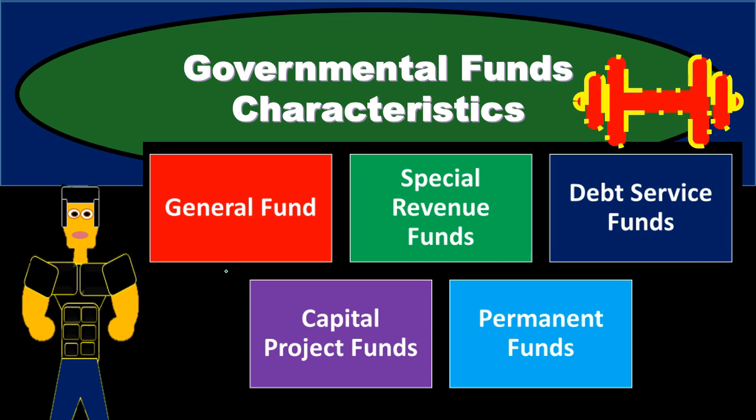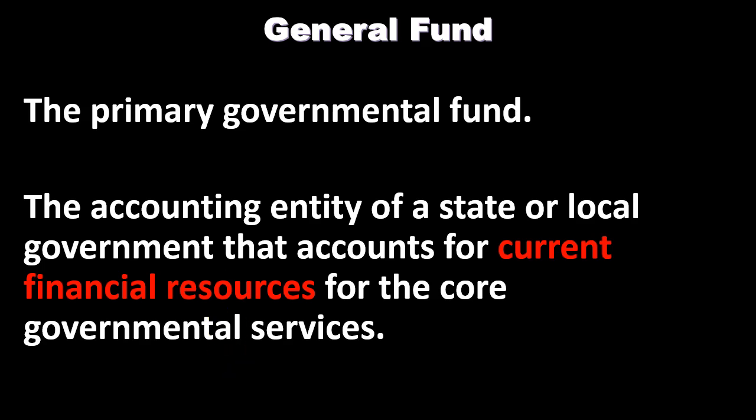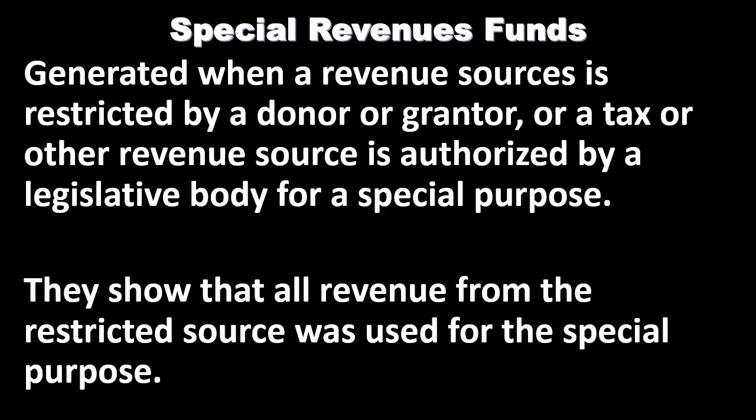We want to compare and contrast the general fund and government-wide activities. The general fund is the primary governmental fund — the accounting entity of a state or local government that accounts for current financial resources for the core governmental services. Note we're accounting for the current financial resources. The general fund, like governmental funds in general, will be on the modified accrual basis. Special revenue funds are only set up when circumstances require it, unlike the general fund where we will always have one.